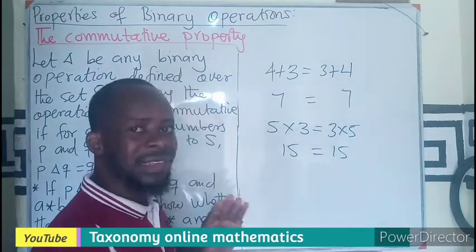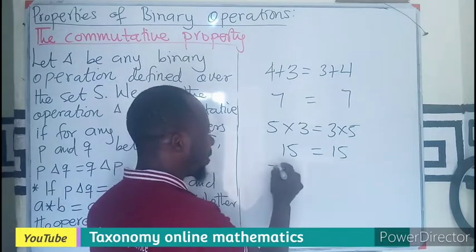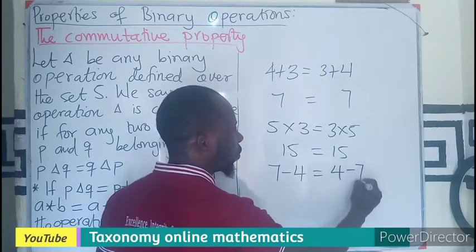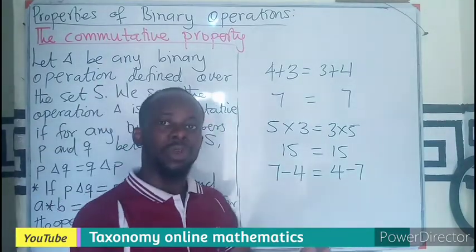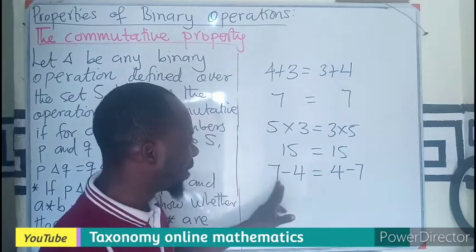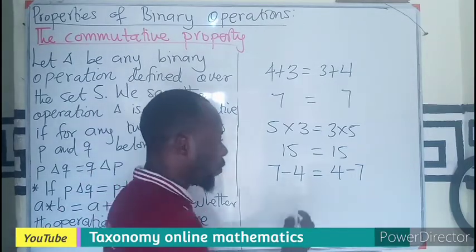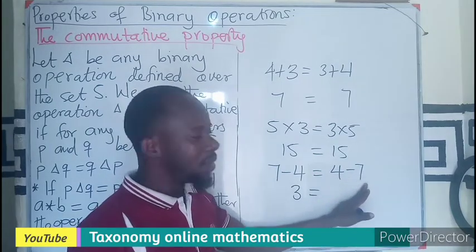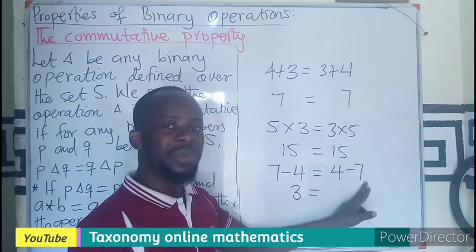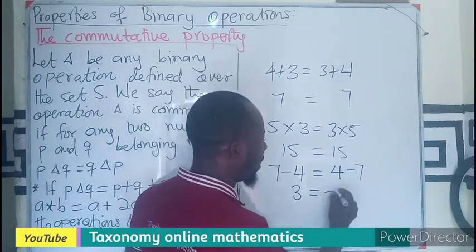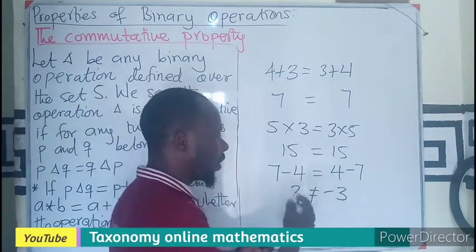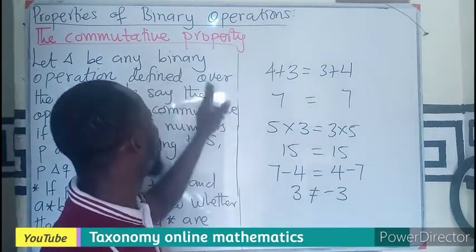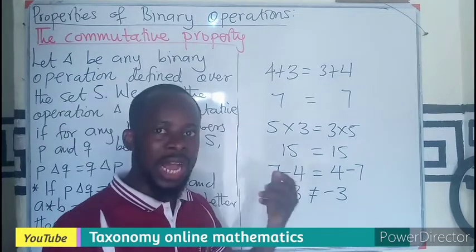Then if I take subtraction as in 7 - 4, we are saying that if I change the order, the results will be different. So I can say 7 - 4 will give us 3. 4 - 7, since the 4 is less than 7, we have a negative value of -3. And since 3 is not equal to -3, we can say that subtraction is not commutative.